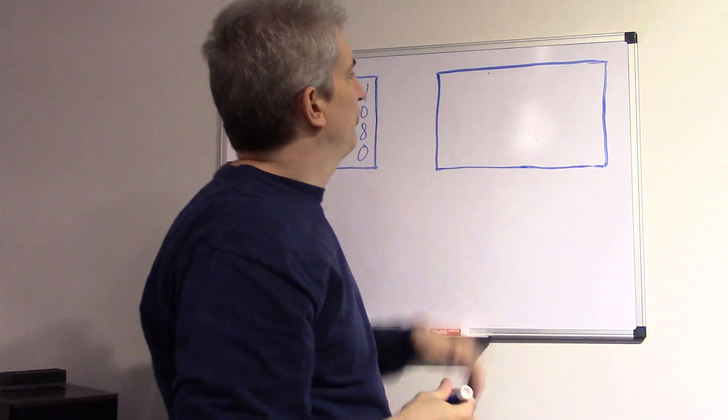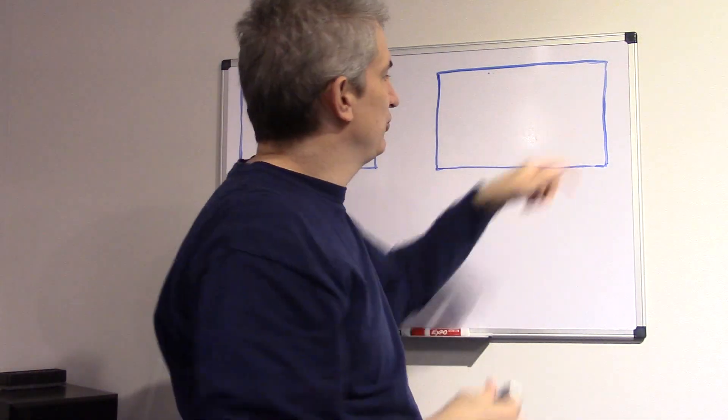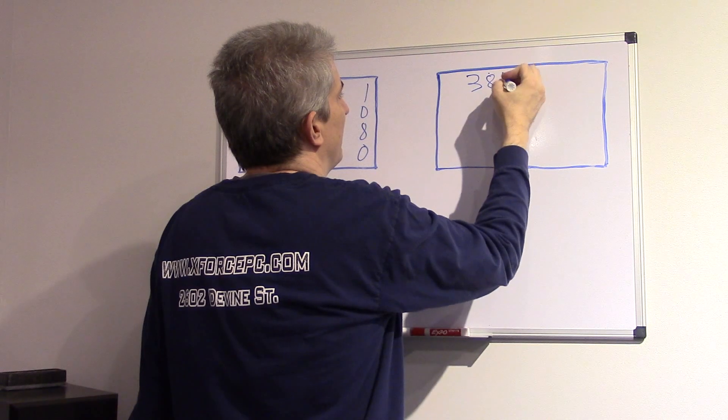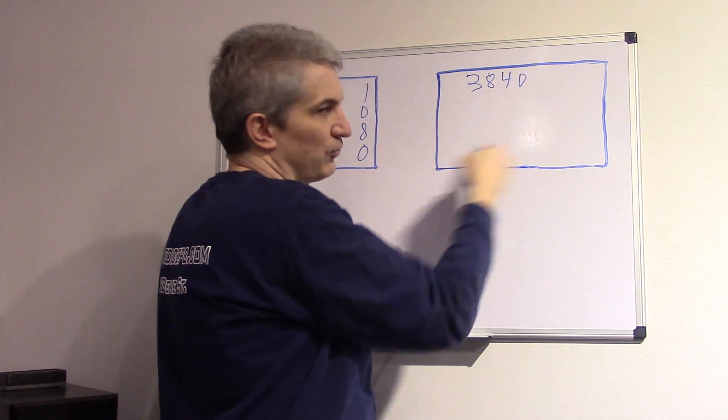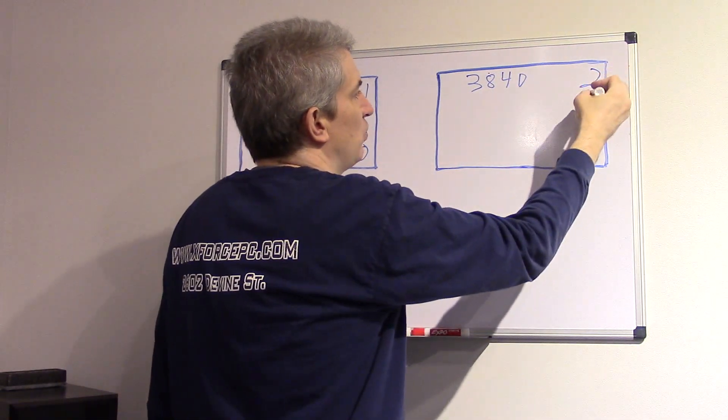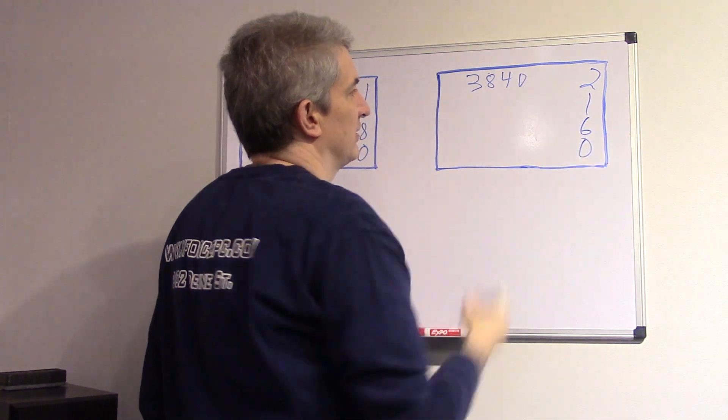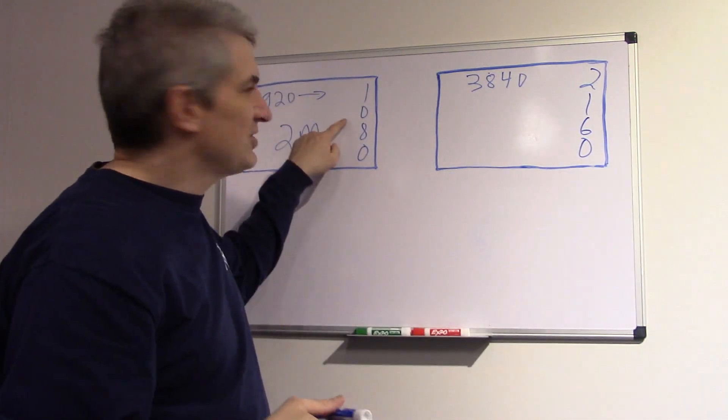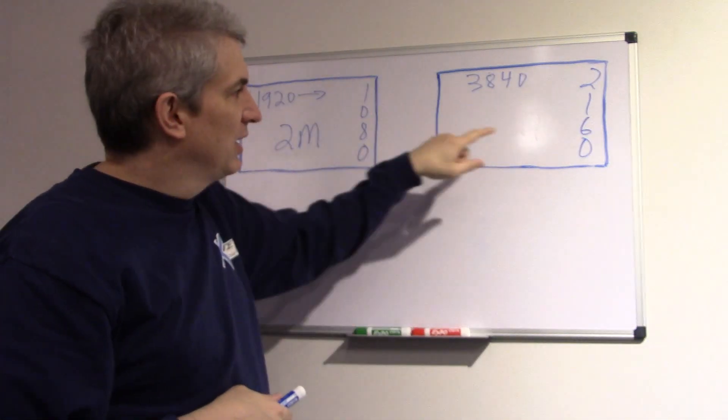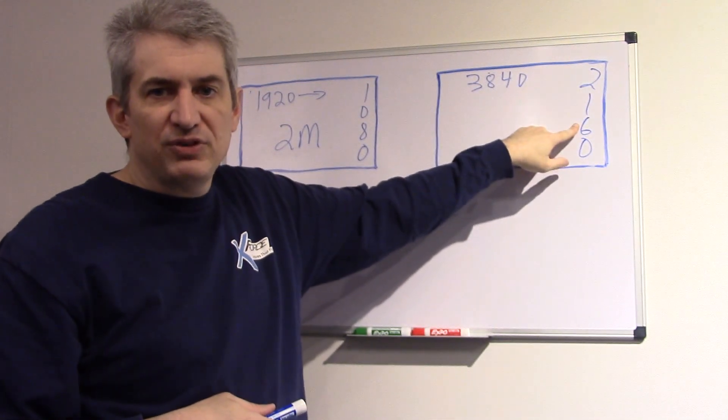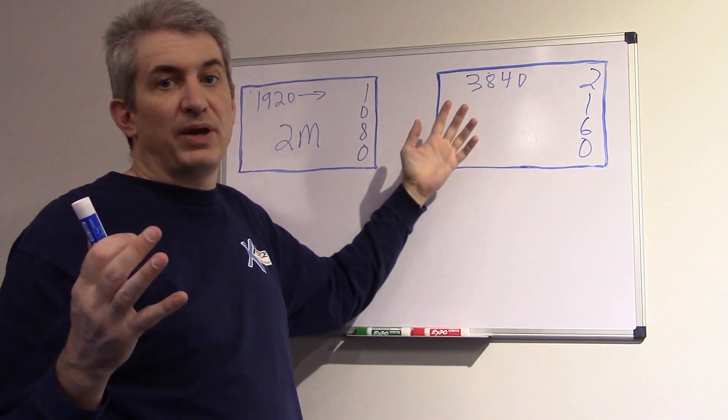Now we move over to 4K. 4K doubles these two numbers. So we have 3840 pixels wide and 2160 vertically. Now if they call this 1080p, I don't know why they don't call this 2160p. They call it 4K.